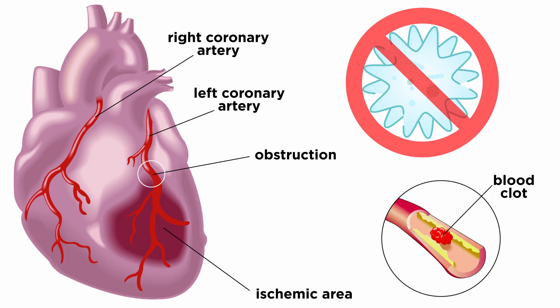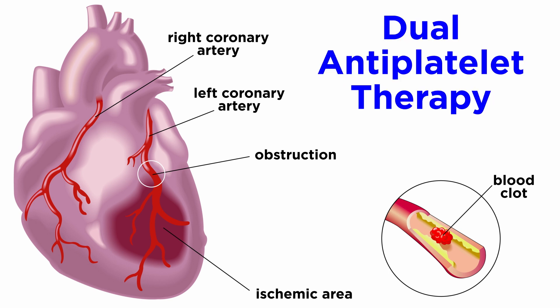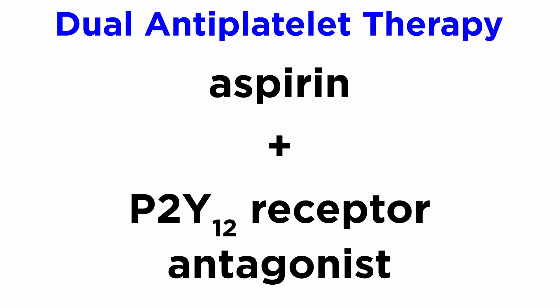The modern gold standard of pharmacological practice to reduce thrombus formation in cases of arterial coronary syndromes is through the implementation of two drugs given concurrently in a strategy known as dual antiplatelet therapy. This revolves around the use of aspirin and a P2Y12 receptor antagonist.